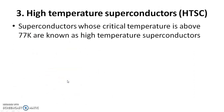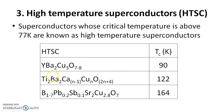The third type is high temperature superconductors. Superconductors whose critical temperature is above 77 Kelvin are called high temperature superconductors, while those below 77 Kelvin are called low temperature superconductors. Examples: yttrium barium copper oxide has a critical temperature of 90 Kelvin; titanium barium calcium copper oxide has a transition temperature of 122 Kelvin; and boron-lead-antimony-strontium copper oxide has a transition temperature of 164 Kelvin.